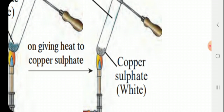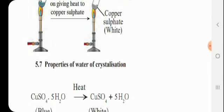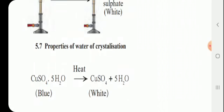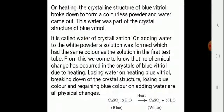On adding water, the solution will regain its blue color. The reason behind this: copper sulfate has five water molecules of crystallization. On heating, water molecules are lost and the color which was initially blue changed into white. On heating, the crystalline structure of blue vitriol broke down to form a colorless powder and water came out. This water was part of the crystal structure of blue vitriol — it is called water of crystallization.